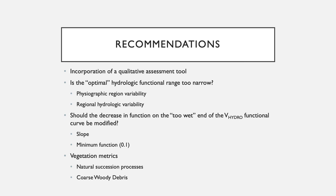A related question is whether wetland function should decrease as rapidly as projected in the hydrologic performance curve as a site becomes too wet, and whether that functional score should go to a minimum of 0.1. There have been conversations that being too wet may or may not be bad for a particular type of wetland, and the vegetation may actually act as an indicator of whether conditions are truly too wet. There are potential revisions being considered — this is a draft document that is being refined as we speak and will continue to be refined in the future.